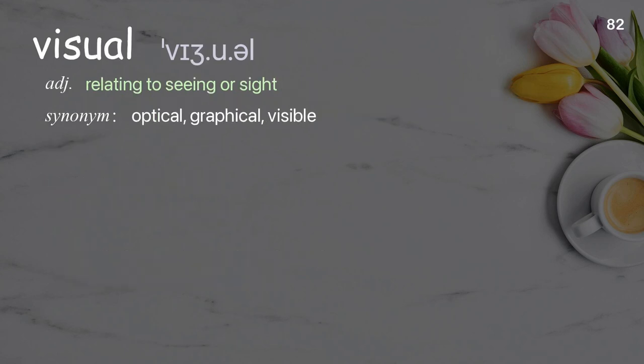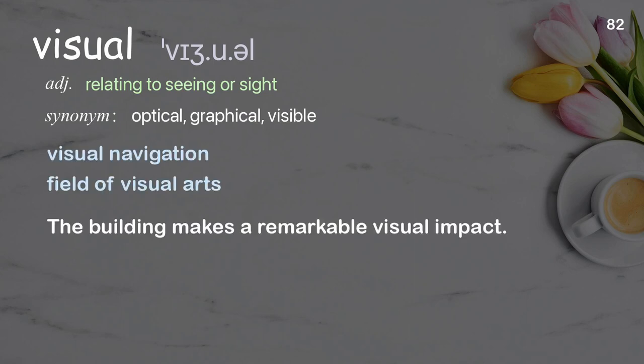Visual. Relating to seeing or sight. Examples: visual navigation, field of visual arts. The building makes a remarkable visual impact.